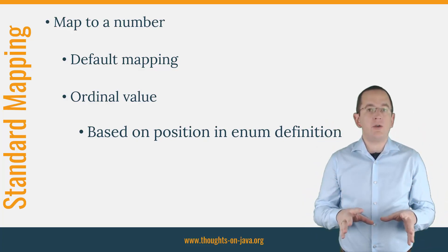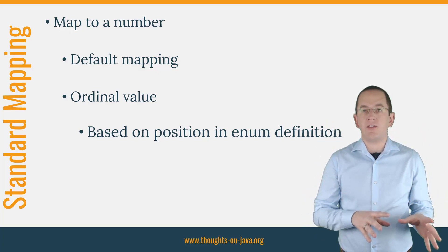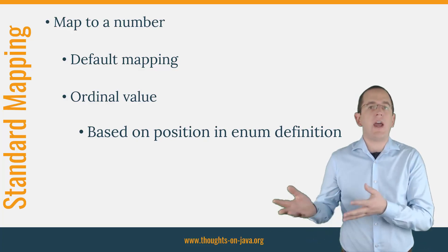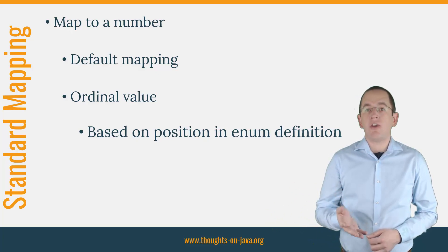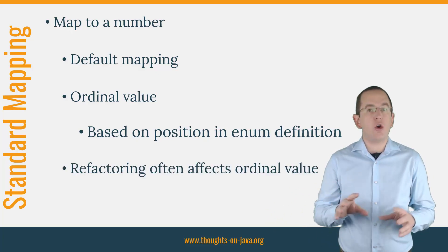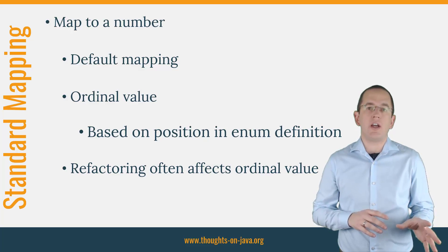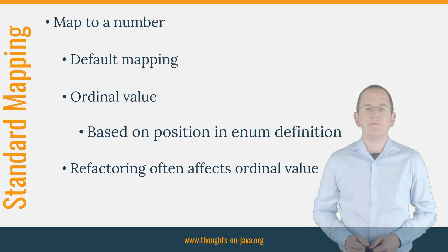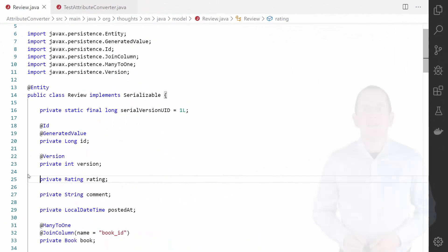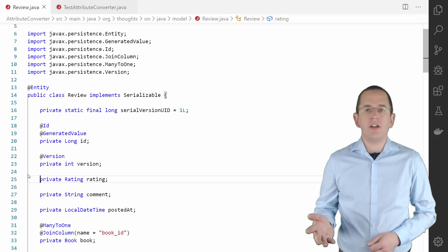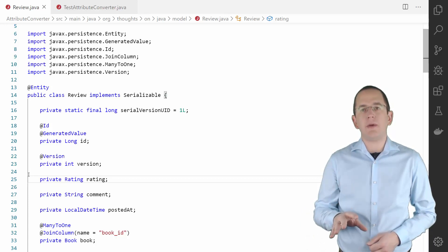So the enum value that's defined first gets mapped to 0, the second one to 1, and so on. This mapping is very efficient, but there is a high risk that adding or removing a value from your enum will change the ordinal values of the remaining values. You don't need to annotate your entity attribute if you want to store the ordinal value of your enum in the database.